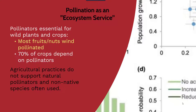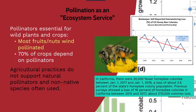Agricultural practices typically do not support natural pollinators, and non-native species are often used for this process. There really is a huge issue with bee populations within the United States. In this figure, we have year along the x-axis and number of millions of bee colonies along the y-axis. From about 2008 to 2018 there's been a significant decrease in the overall number of bee colonies present within the United States, and in California there's been significant continued loss of bee colony populations even more recently.